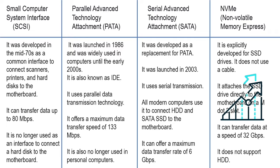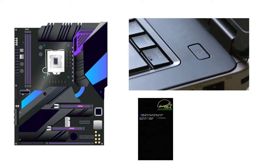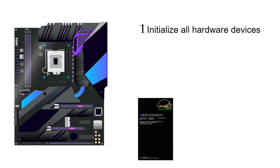Computers use firmware to initialize hardware. Firmware is a small program stored inside a chip on the motherboard. When we start a computer, it is the first program that runs. It performs three tasks: initialize all hardware devices, find the bootloader program, and execute it.